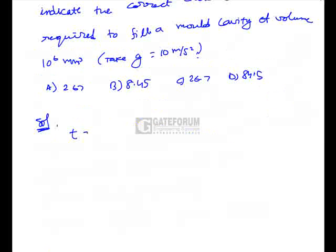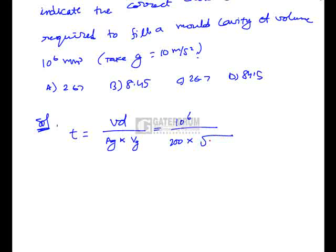The time required to fill a mould cavity is given by the volume of the mould cavity divided by the area of the gate times the velocity at the inlet of the gate. Volume is 10.6 × 10⁶ mm³, area of gate is 200 mm², and velocity equals √(2gh) = √(2 × 9.81 × 175 mm). This gives a value of 2.67 seconds, so the right option is A.